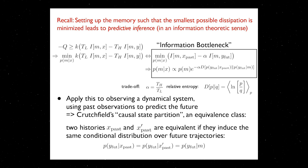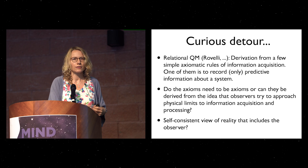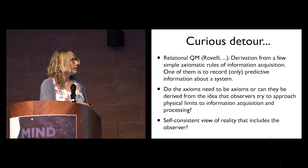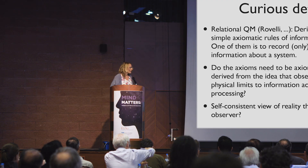You can use this to capture information about time series. An interesting detour: from pushing the thermodynamic limits on making a memory, I find a representation where I should capture predictive information — and that is also one of the main ideas Carlo proposed in his relational quantum mechanics, one of the axioms needed to re-derive things from an agent point of view. I would like to ask whether these axioms really need to remain axioms or whether they can be derived from the idea that observers just try to approach some physical limits. Maybe they form a complete set of axioms that could allow us to re-derive quantum mechanics, giving a self-consistent description of reality that includes the observer.